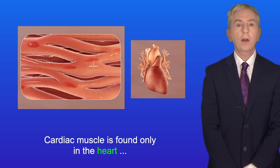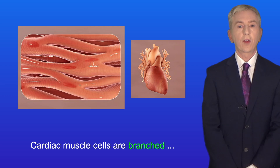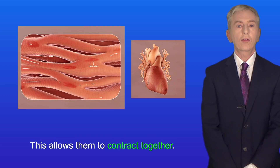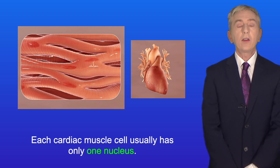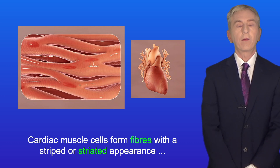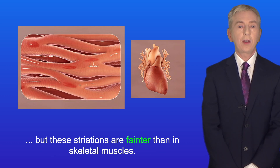Cardiac muscle is found only in the heart and is under involuntary control. Cardiac muscle cells are branched and are connected to each other at the ends, which allows them to contract together. Each cardiac muscle cell usually has only one nucleus. Cardiac muscle cells form fibers with a striped or striated appearance, but these striations are fainter than in skeletal muscles.